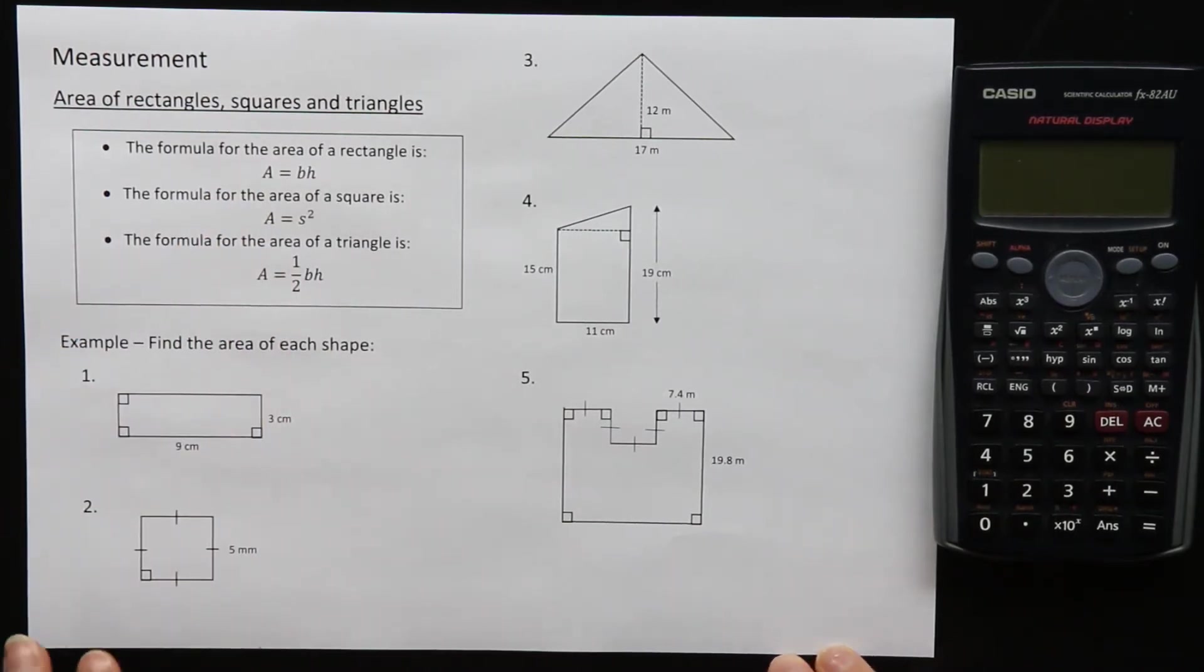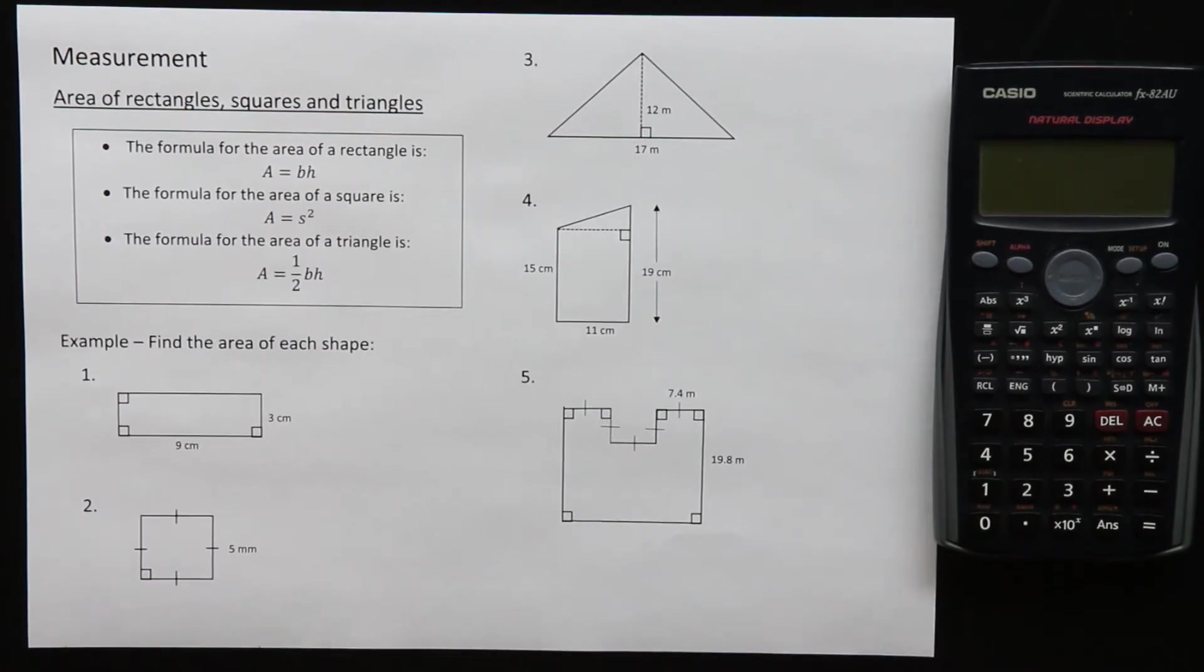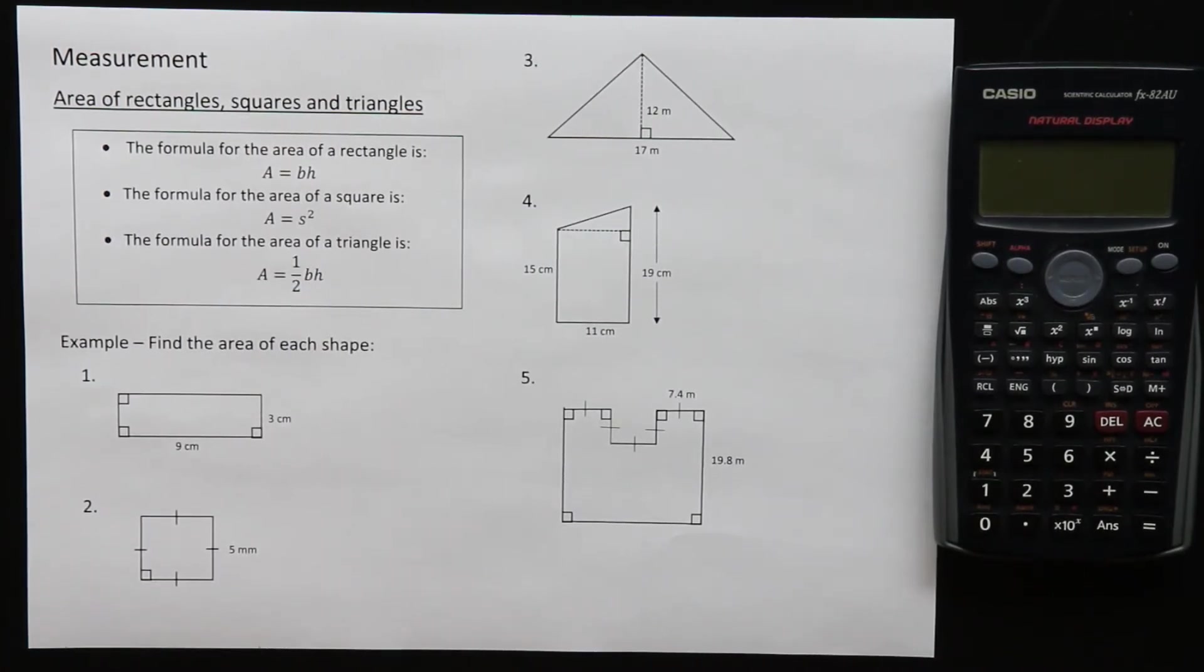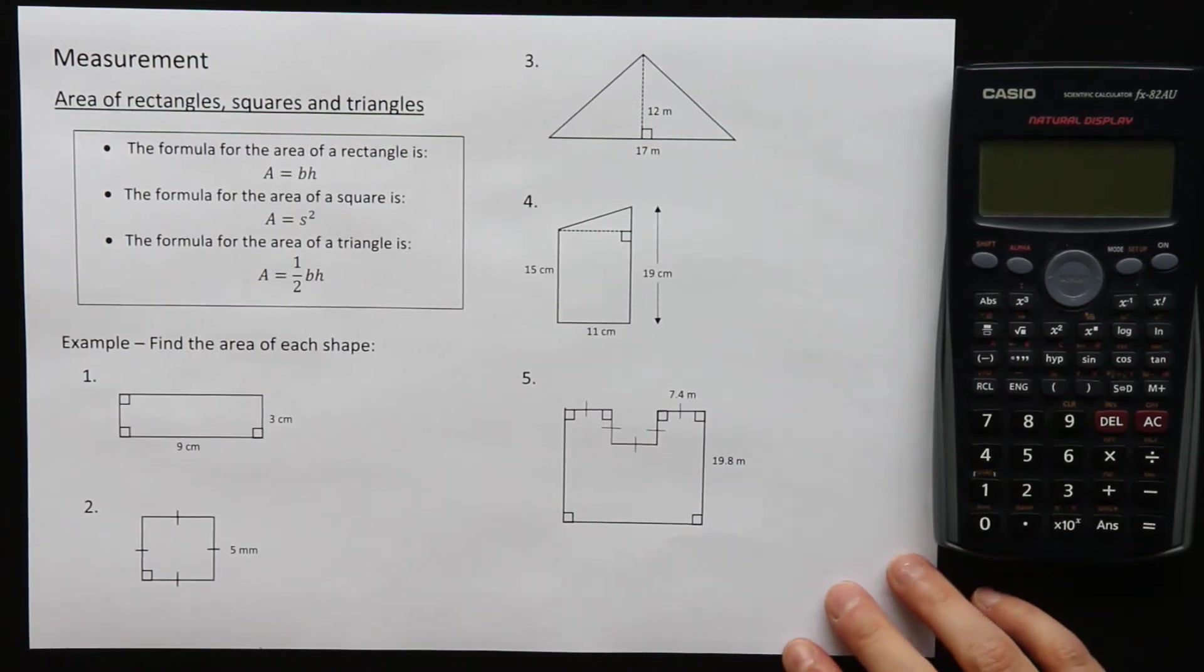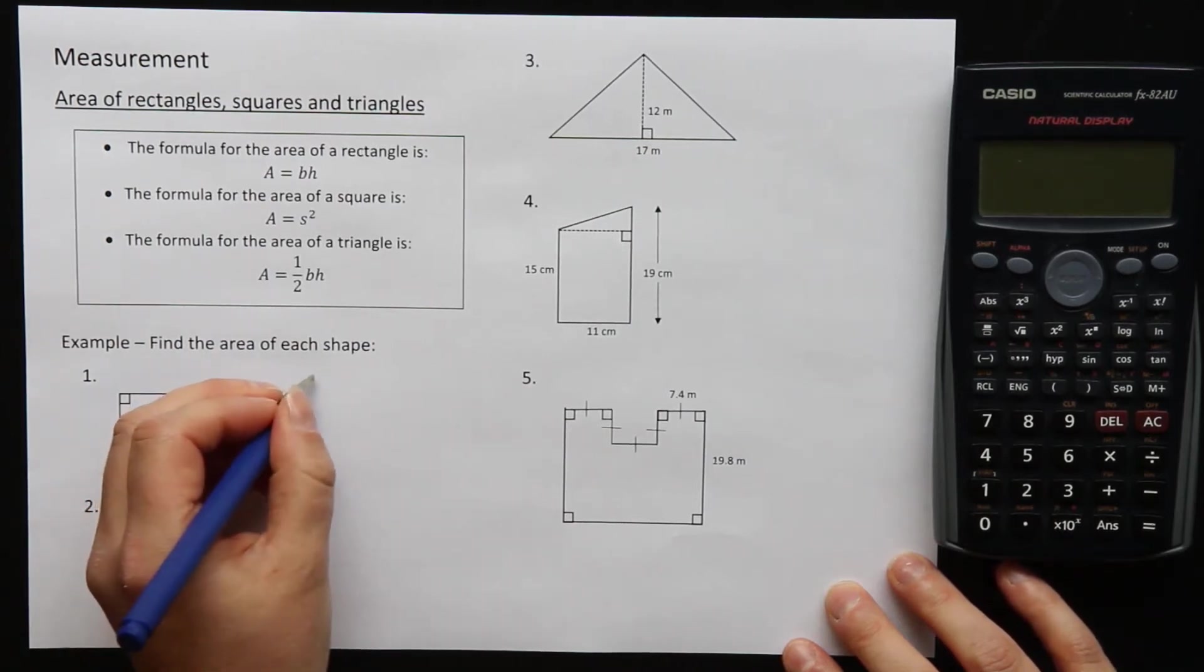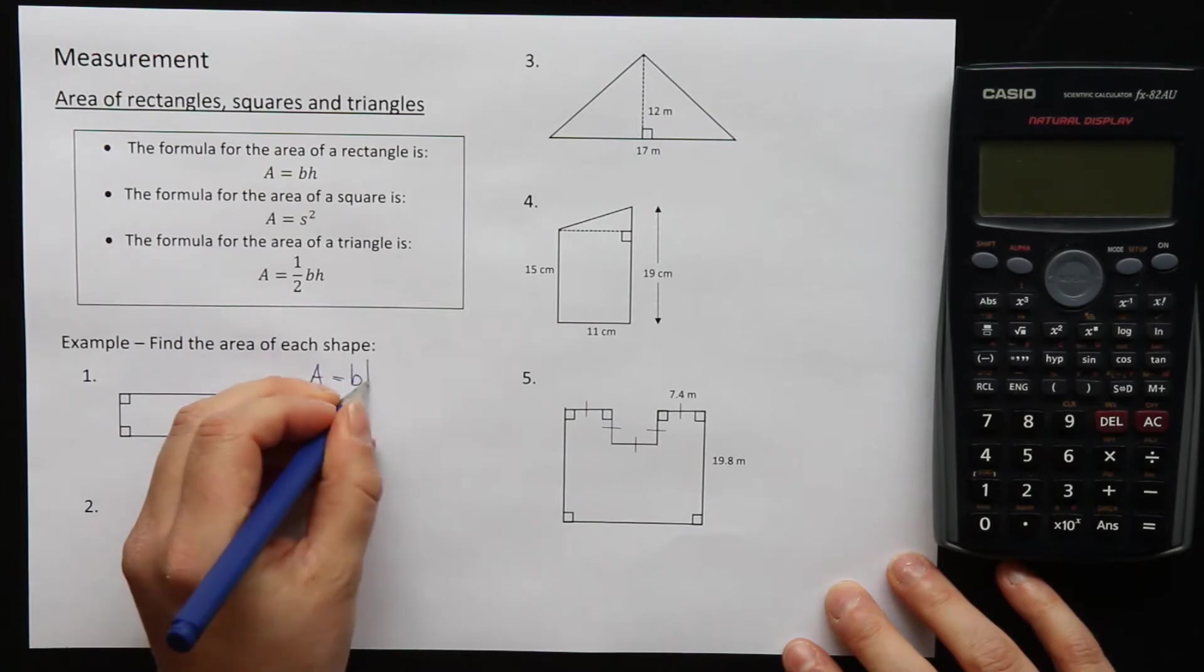Here are some examples for us to do. We want to find the area of each shape. First of all, you just need to identify what the shape is. So this first shape is a rectangle, so we write down the formula for a rectangle. The formula for the area of a rectangle is A equals BH.